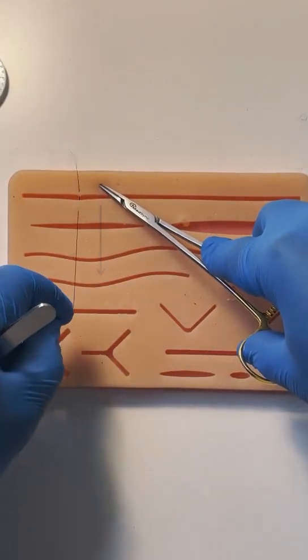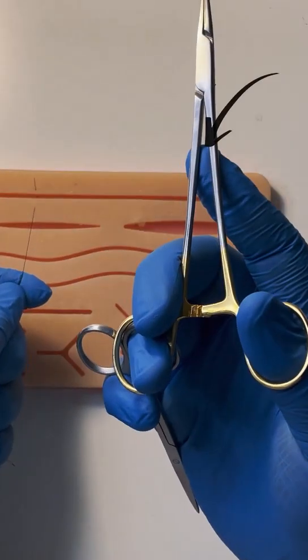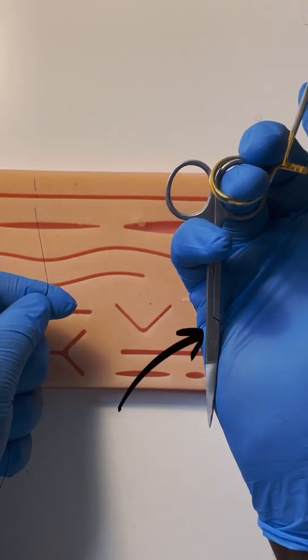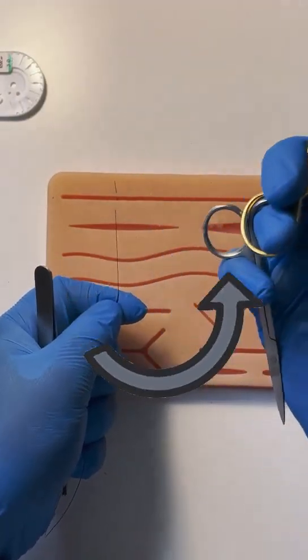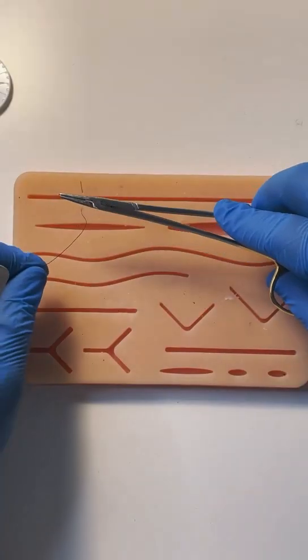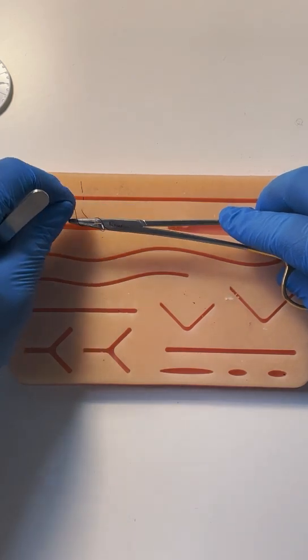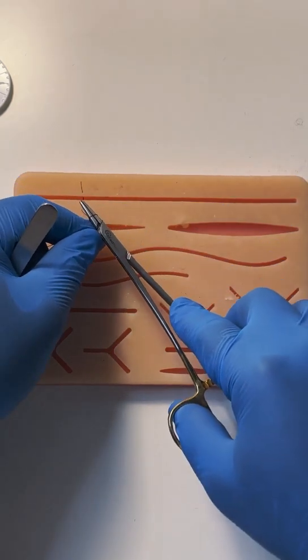Pull it in one hand. Your forceps are here, your needle holder is here, and your scissors are here. This is economy of movement. Wrap the suture just around the tip of the needle holder by pushing forward, your surgeon's knot and tie.